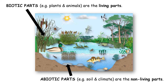Ecosystems contain living parts — the plants and animals. These are called the biotic parts. So in this pond we have ducks, we have fish, but also we have the pond plants and trees; they're all the living parts. We also have abiotic parts — things like the rocks and the soil, things that are non-living.